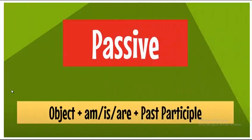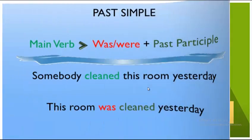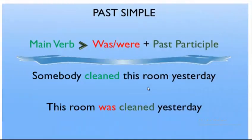For regular verbs, we form the past simple and past participle by adding 'd' or 'ed' — like play/played, clean/cleaned, help/helped. So when changing to passive, start with the object, followed by the verb 'to be' in the present ('is' or 'are'), then the past participle of the verb.